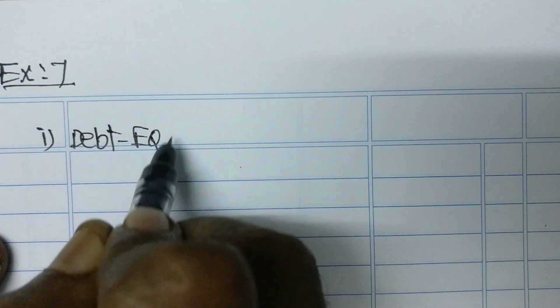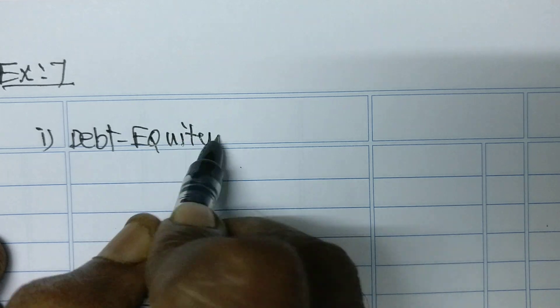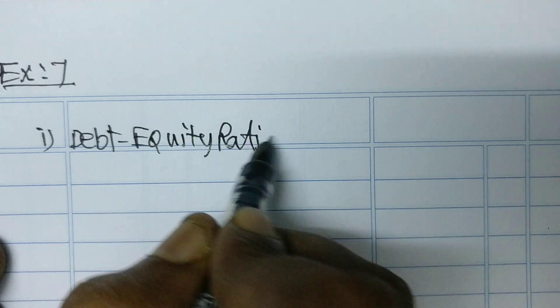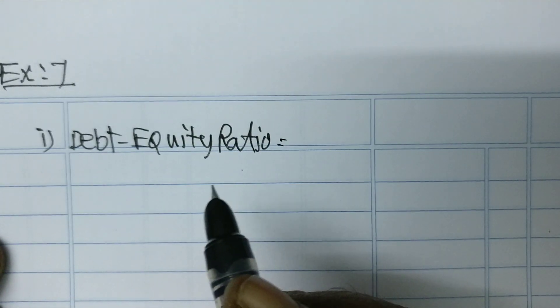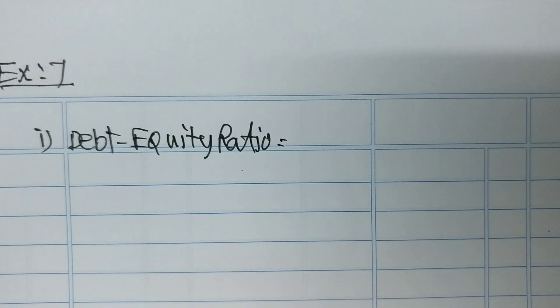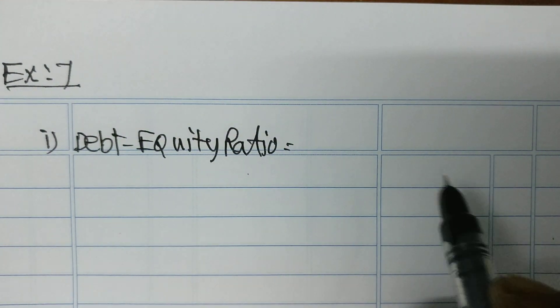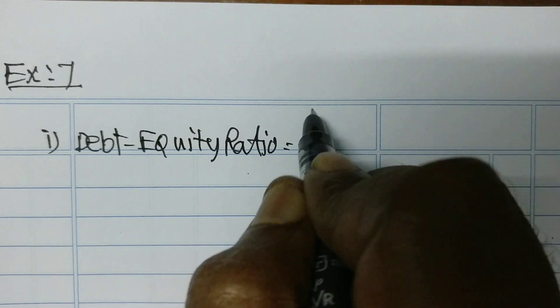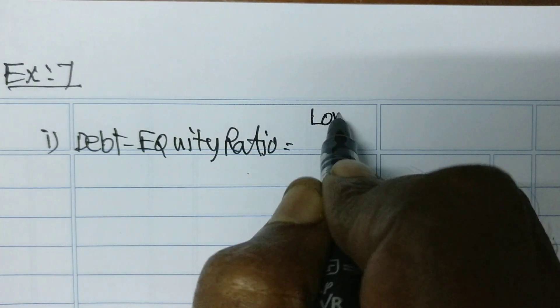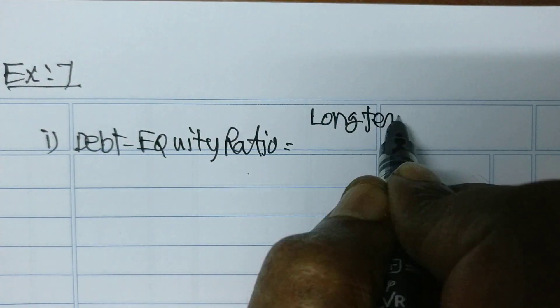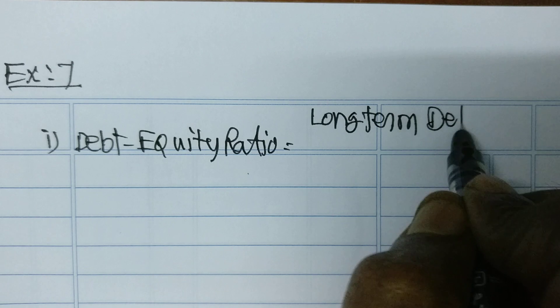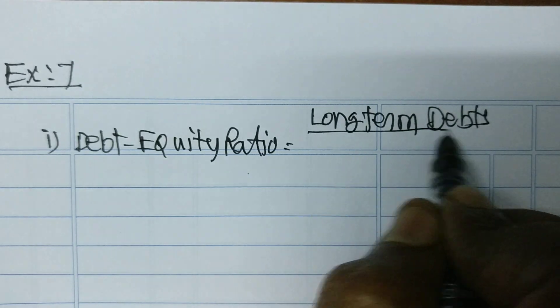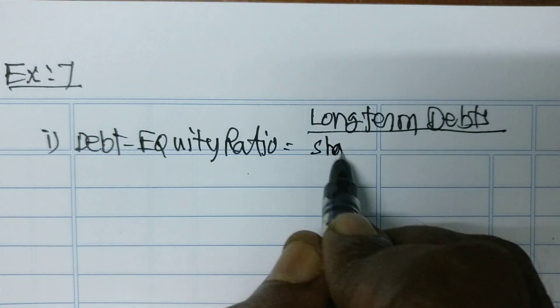Debt equity ratio. To find out the debt equity ratio, the formula is: long-term debts divided by shareholders' funds.